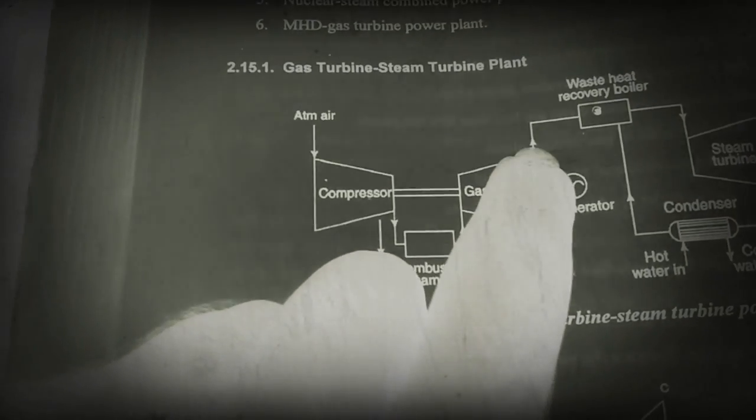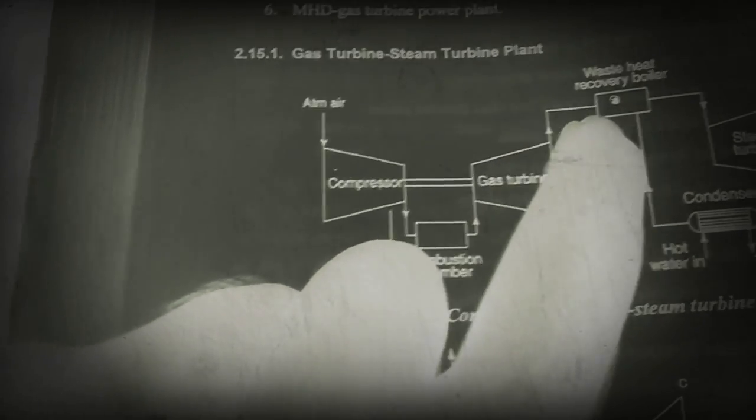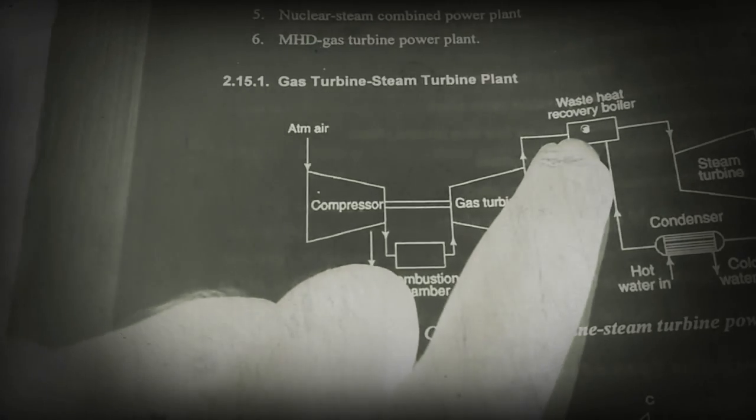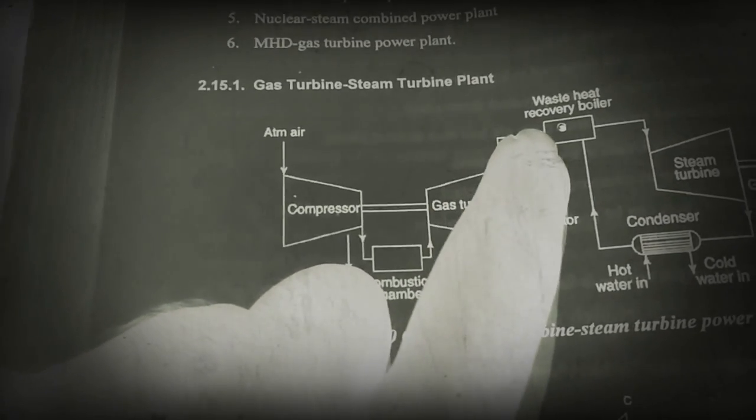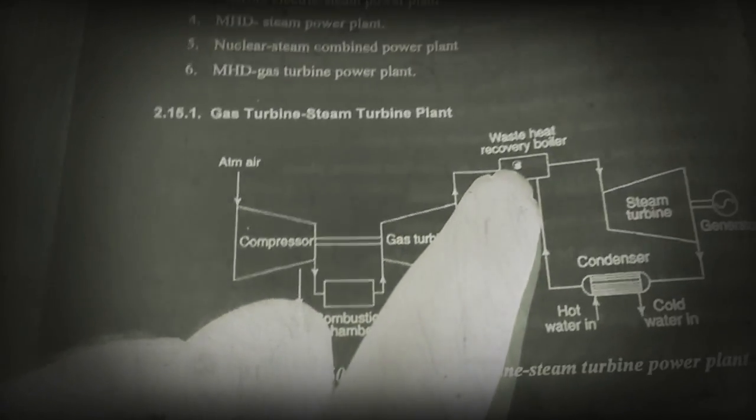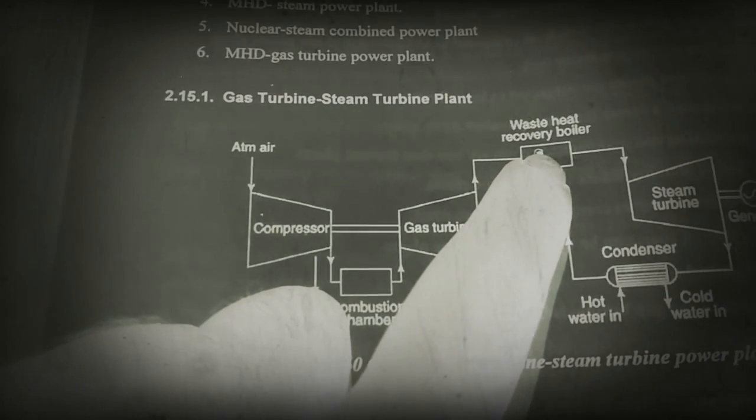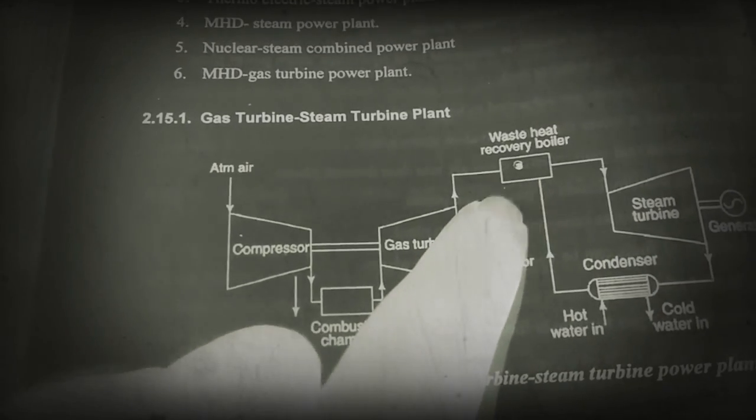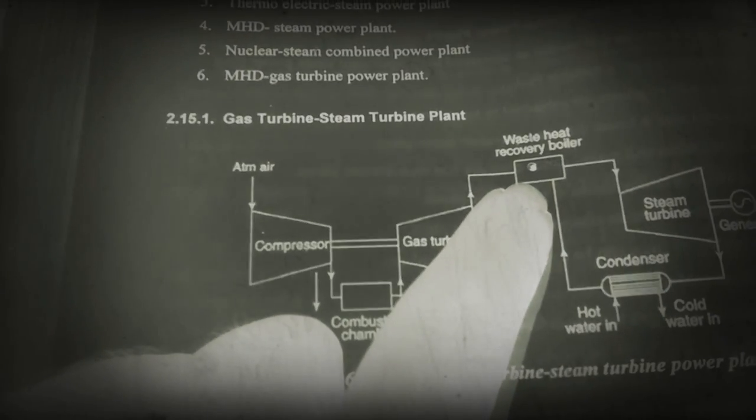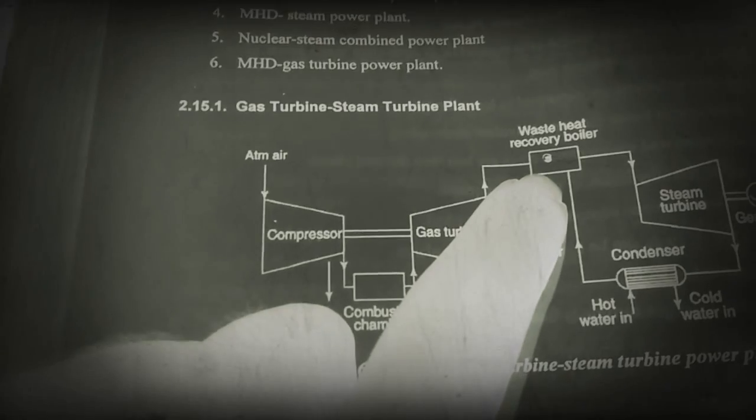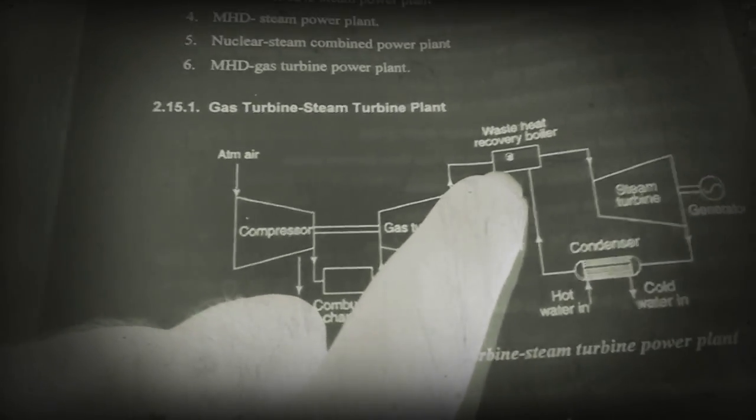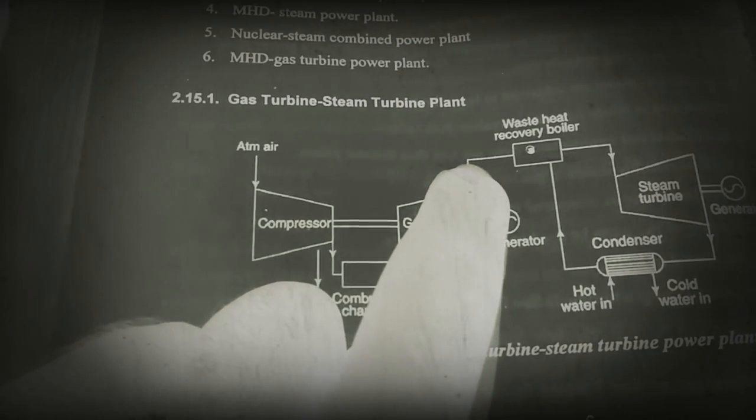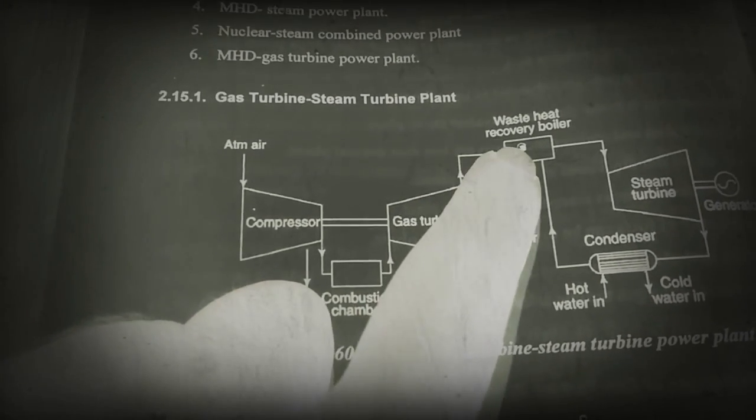The waste heat recovery boiler uses the hot gas to produce steam. The hot gas boils the water and produces steam. It is a type of heat exchanger where the heat of the exhausted low-pressure gas is used to heat the